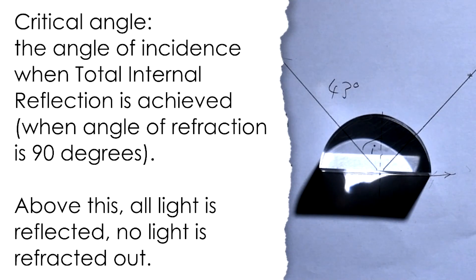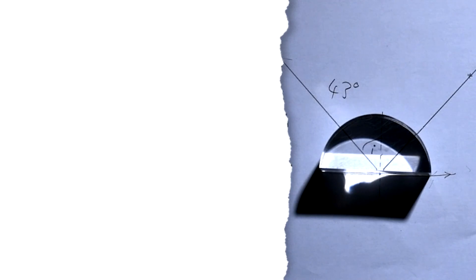So, in order for TIR to happen, you need the angle of incidence to be bigger than the critical angle, but you also need something else to be true. You need another condition.